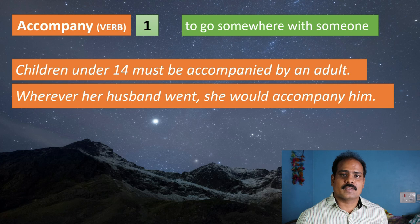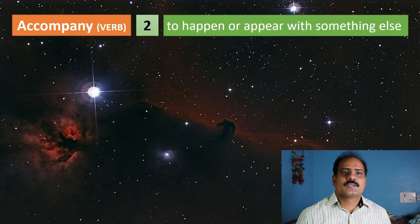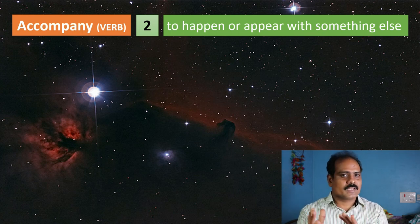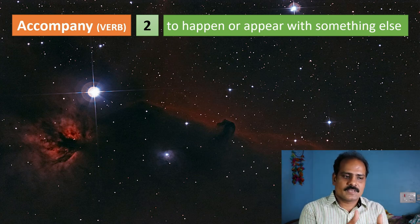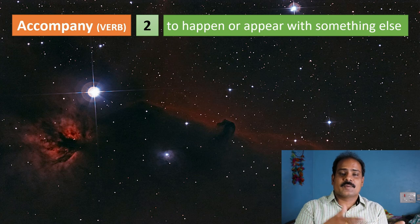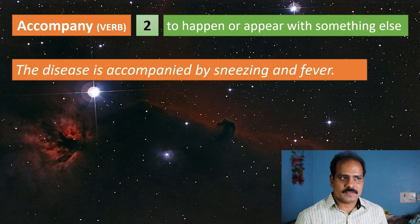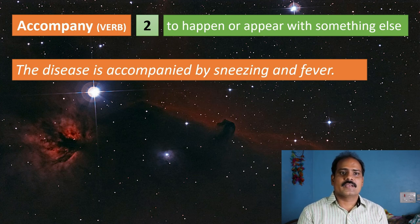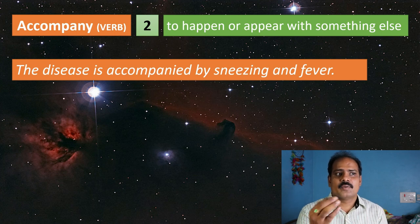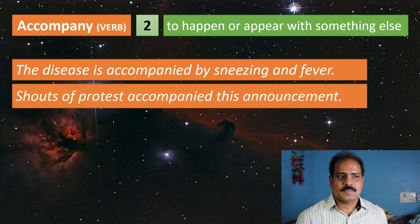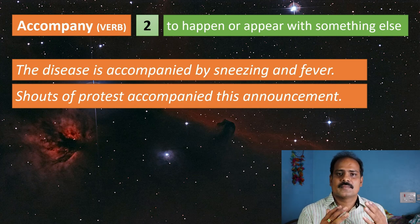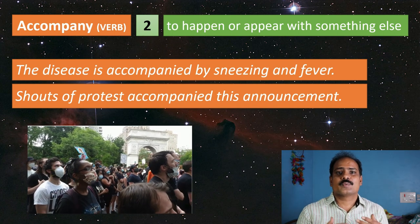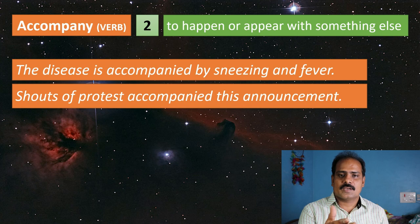The second meaning of accompany as a verb is to happen or appear with something else. For example: 'The disease is accompanied by sneezing and fever' — meaning sneezing and fever come with that disease. Another example: 'Shouts of protest accompanied this announcement' — meaning immediately after this announcement, there came shouts of protest.